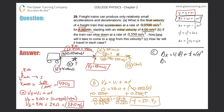So displacement for the part in black is going to be the initial velocity of 4.00 multiplied by my time value of 480 seconds, plus one half of my acceleration of 0.0500, multiplied by my time value squared — so 480 squared.